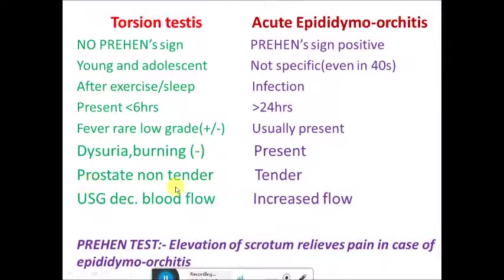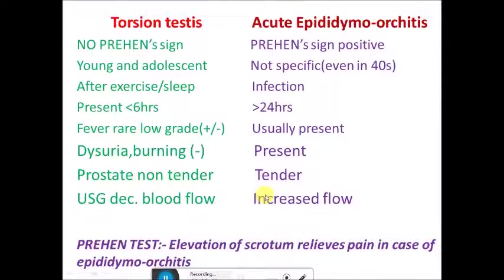On per rectal examination of the prostate, there is no tenderness in case of torsion testes, but in acute epididymal orchitis there is prostate tenderness. On ultrasonography, torsion testes will show decreased blood flow, while in acute epididymal orchitis there is increased blood flow. Torsion testes should be operated, while epididymal orchitis can be managed with antibiotics as it is an infective condition.